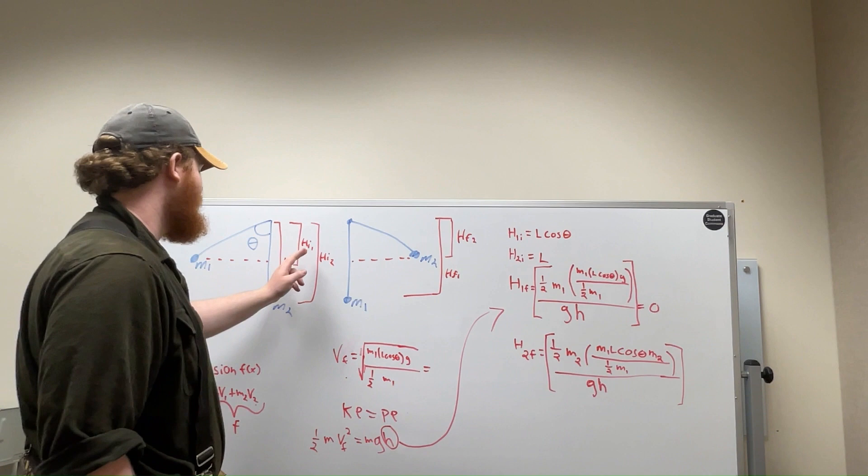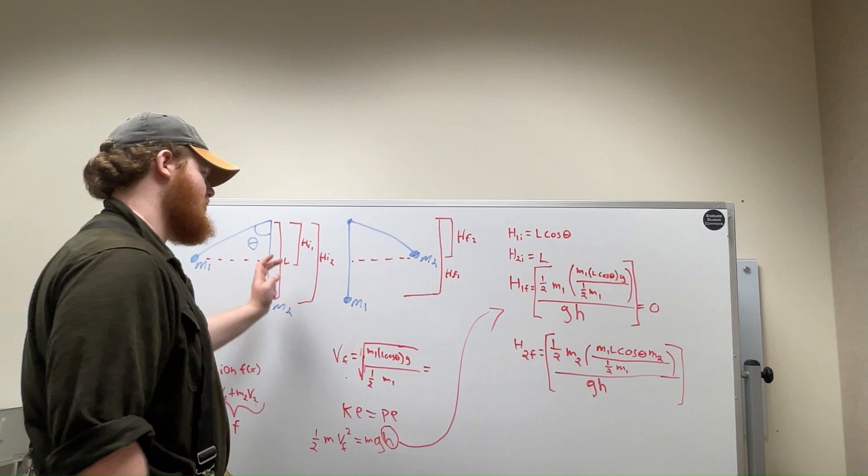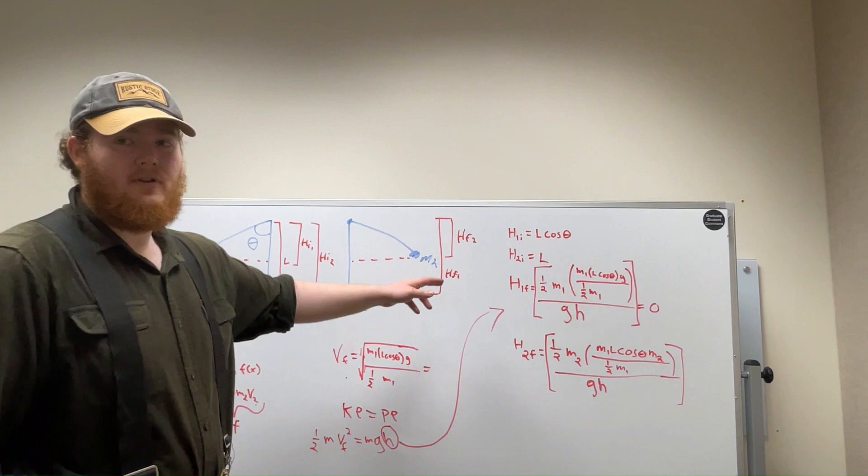We found that by taking the cosine of the original degree to get the length of the rope that M1 was initially at. So that's height 1 initial. Height 2 initial is just L because that was given.